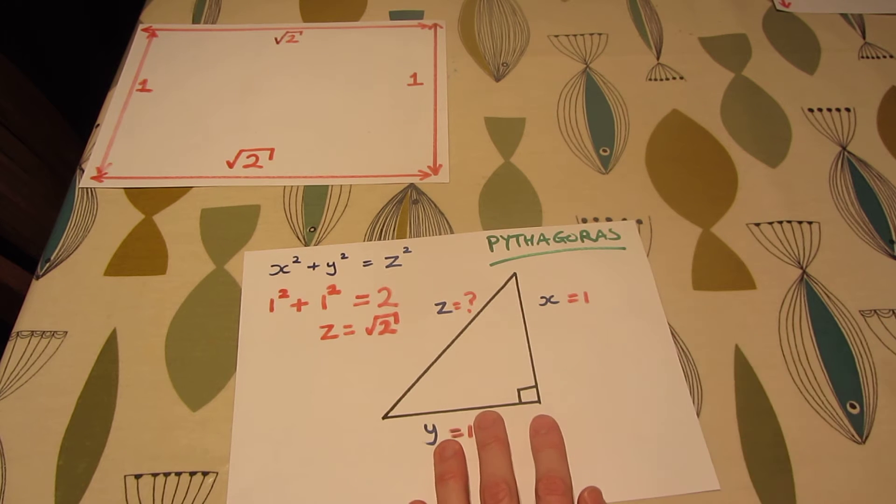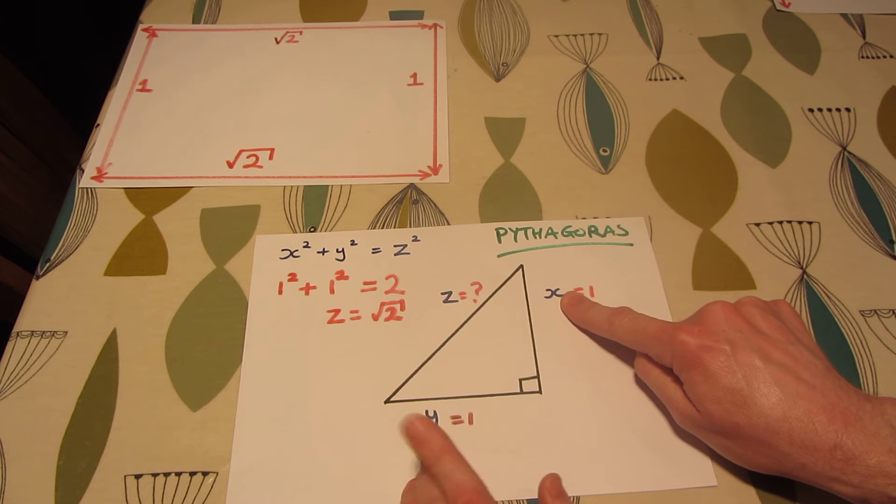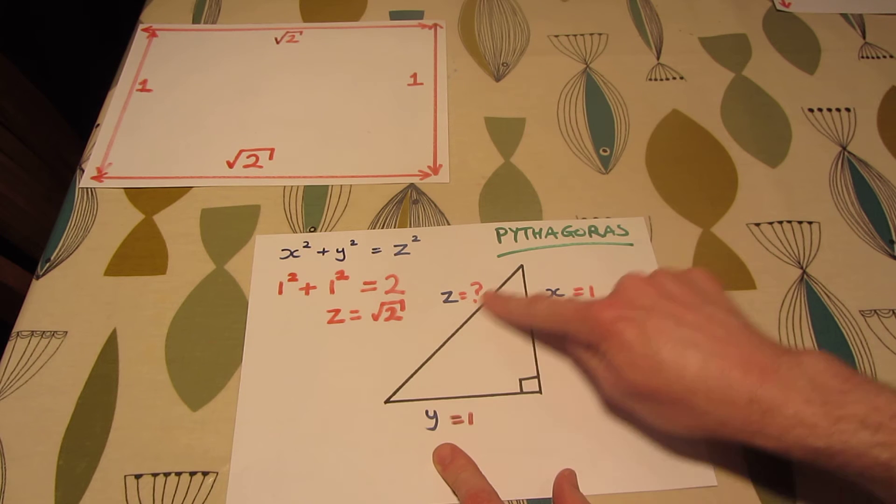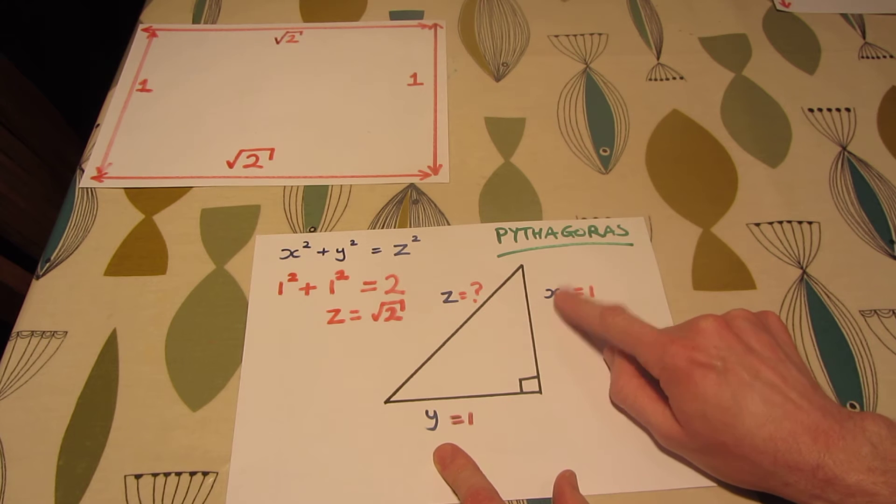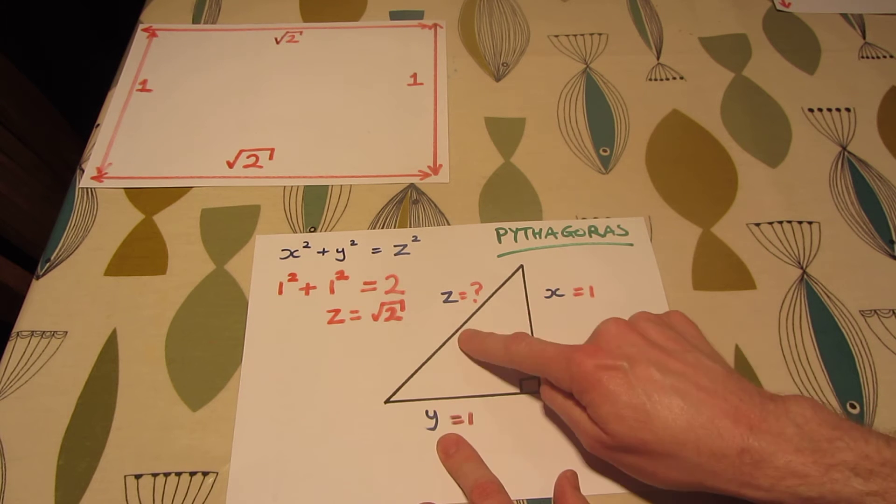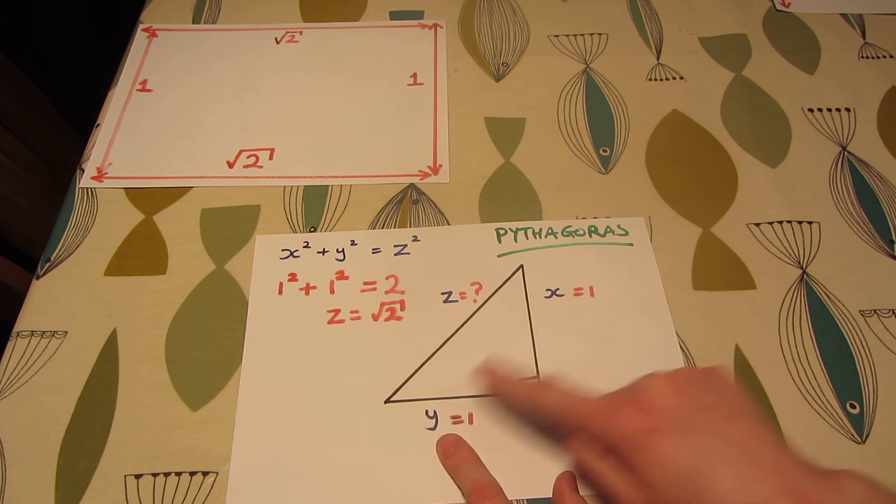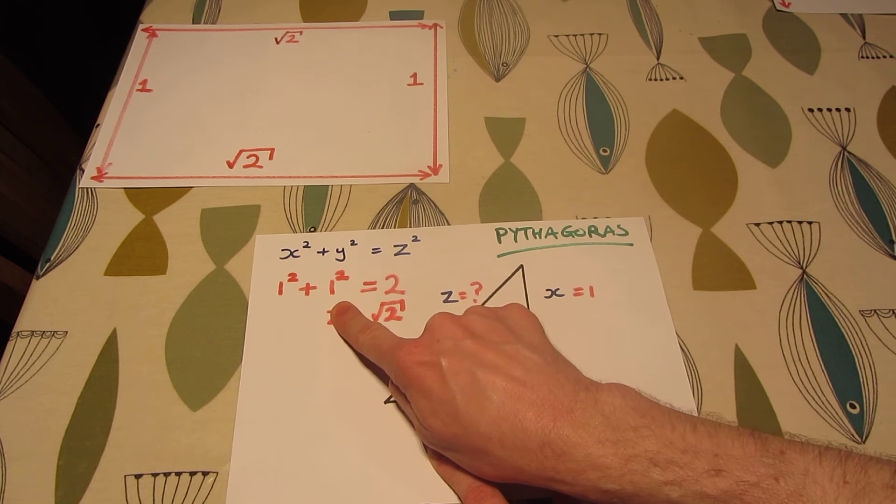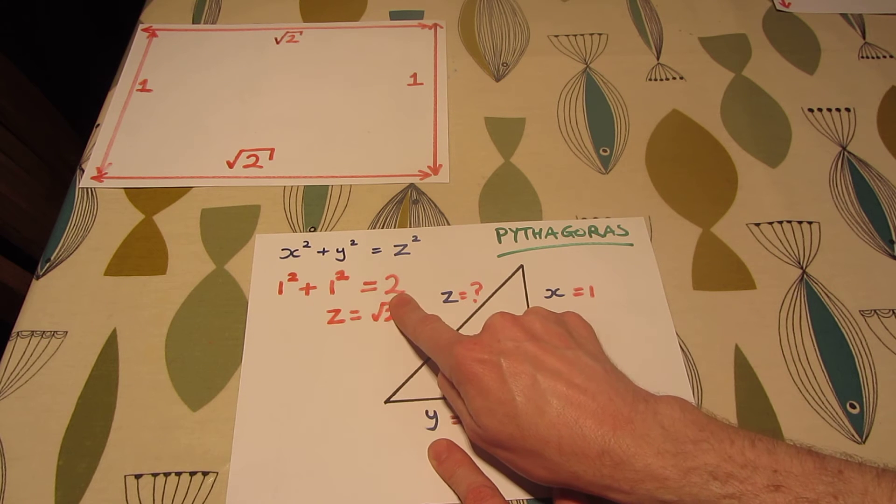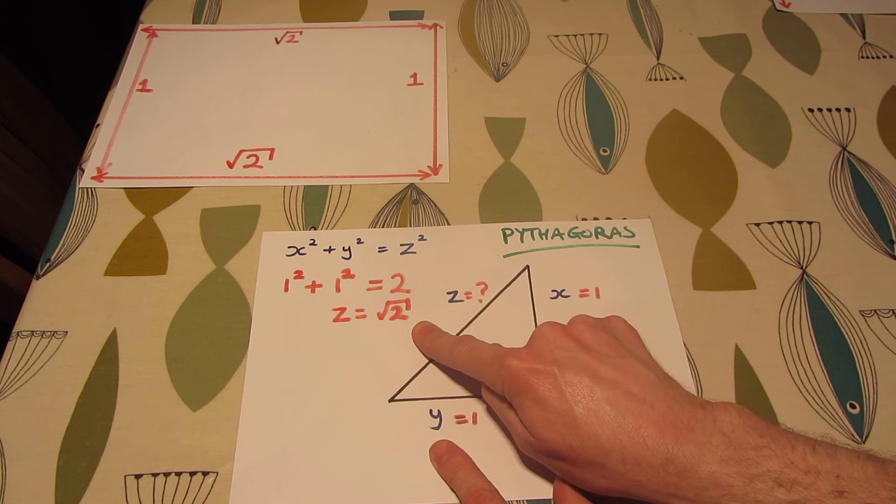Pythagoras. Right angle triangle, this side is x, this side is y. The longer side is calculated as follows: x squared plus y squared is z squared. If x and y are both one, you work it out as one squared plus one squared equals two. So z equals the square root of two.